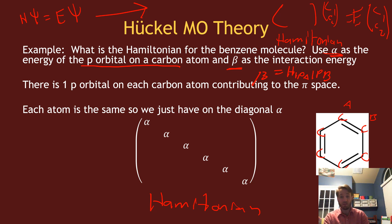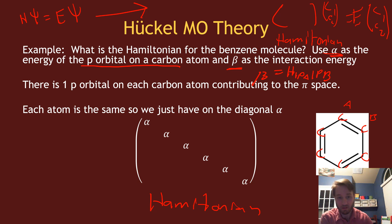I only have six electrons in this pi space because each carbon atom contributes only one pi electron. The diagonal is fairly simple: for each atom, I put an alpha along the diagonal of this matrix.